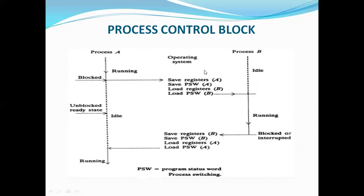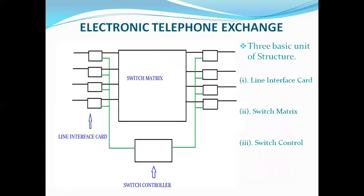This is a good example to show how two processes can simultaneously get executed throughout any exchange. Not only two — in any exchange, millions of processes can get executed simultaneously. This is a simple illustrative example. Now let me discuss electronic telephone exchanges. We discussed the software portion; now let's look at the hardware portion. The hardware portion has three types of basic units: one is a line interface card or line interface unit.